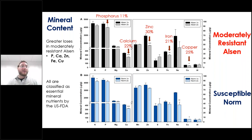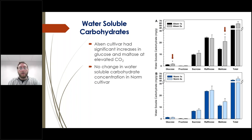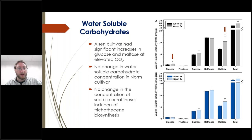This loss of minerals is also going to impact the fungal pathogen because it is a consumer of this grain too. We saw a dramatic increase in carbohydrates. Looking at overall water-soluble carbohydrate concentration, the Norm variety had no significant changes in carbohydrate concentration, but the mildly resistant Elsin had significant increases in glucose and maltose. However, there was no significant change in the total concentration of water-soluble carbohydrates, suggesting additional carbohydrates were storage carbohydrates such as starch. Importantly, there was no significant change in sucrose and raffinose, which are known inducers of trichothecine biosynthesis — the mycotoxin DON.